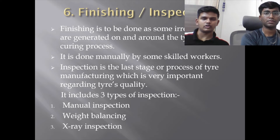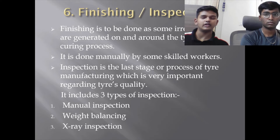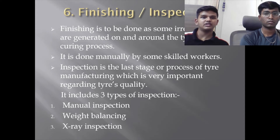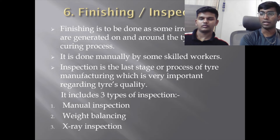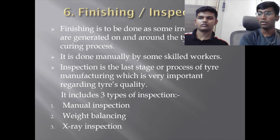After curing, finishing is done to address irregularities generated on and around the tyre — this is done manually by skilled workers. Inspection is the last stage of tyre manufacturing and is very important for quality. It includes three types: manual inspection, weight balancing, and X-ray inspection. All tyres are visually inspected and placed on a tyre uniformity machine. Unfortunately, the visual inspection process sometimes allows only 15 seconds per tyre. When an abnormality is discovered, a tyre is sent to classifiers who can leave the tyre for repair, scrap it, or set it aside for further inspection. Repairs include trimming and grinding.